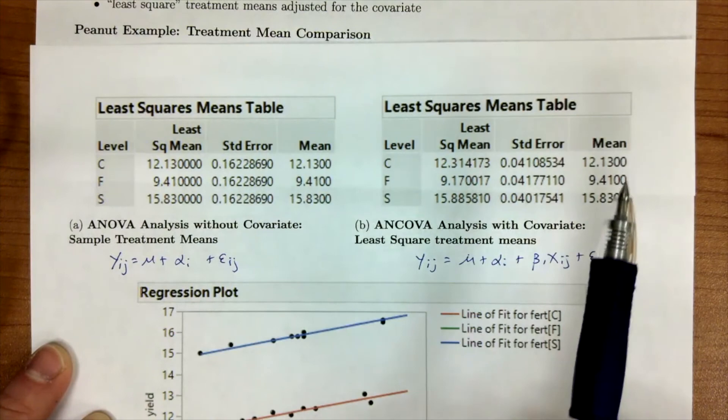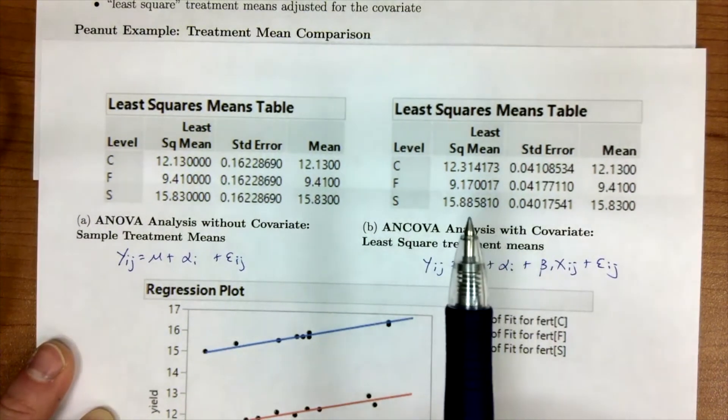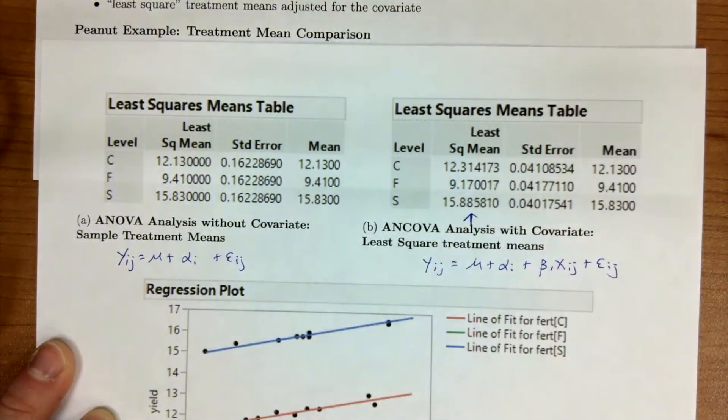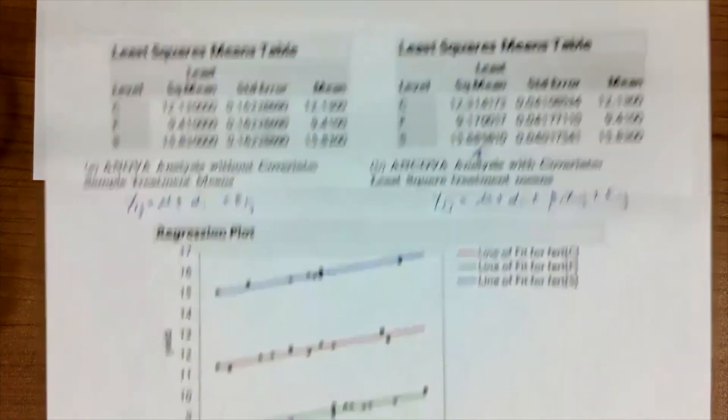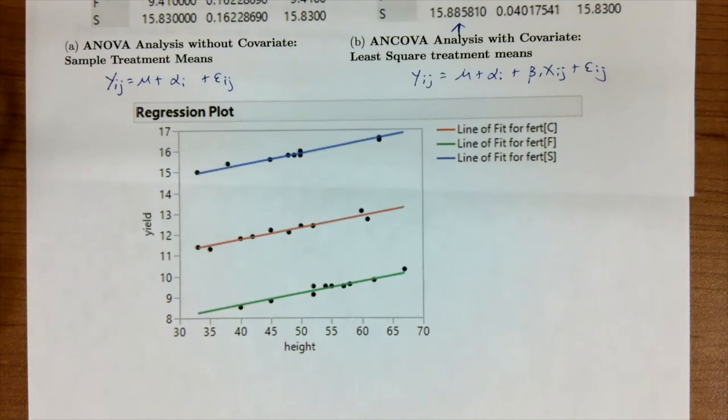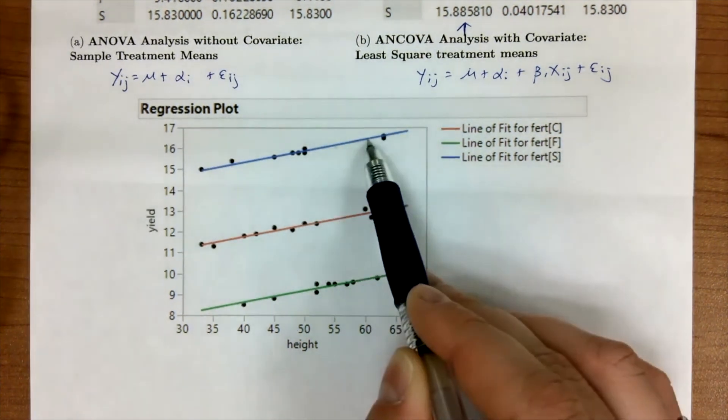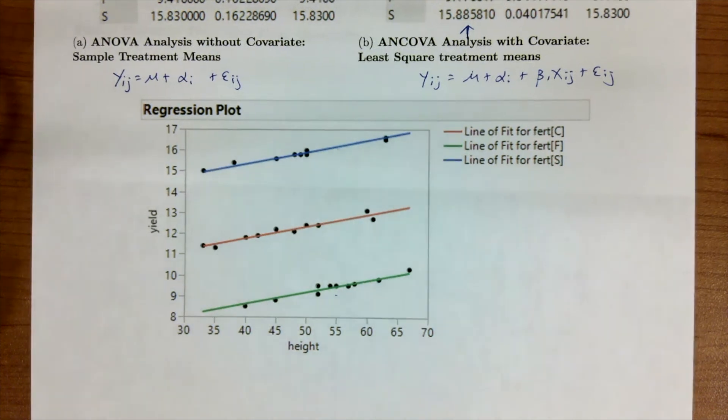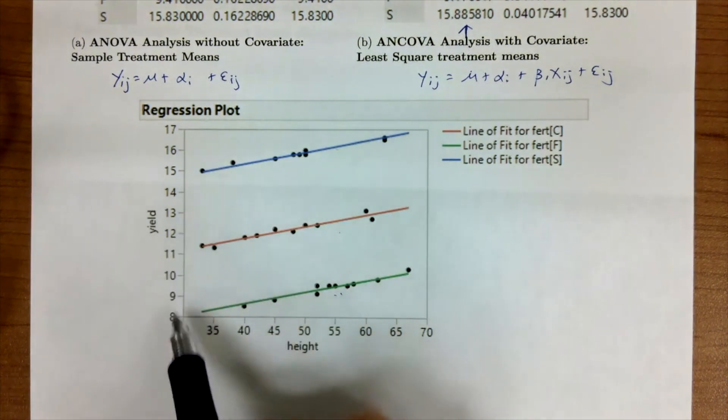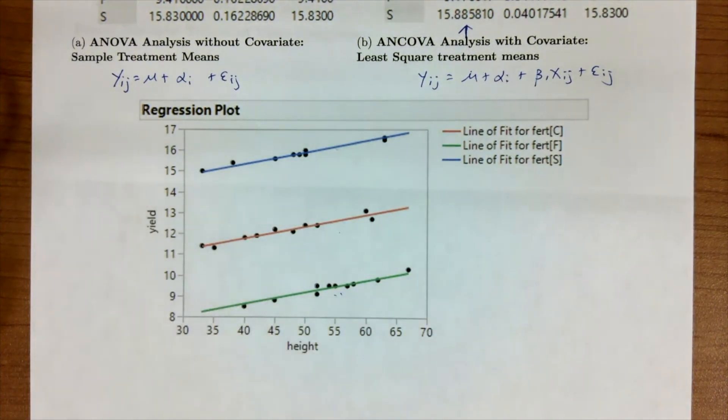In our next lesson, I will talk more about how these estimates are derived. The big result of why these are different is because it's being adjusted for the impact of that initial height of the plants. The cool thing of what ANCOVA allows us to do is it allows us to use a different regression line for the heights based on the groups. We're fitting a regression line for each fertilizer. Notice though, because of how we set up our model, these slopes will be the same and it's just the intercept changing. In our next lesson, we're going to make the connection between ANOVA and this regression model.